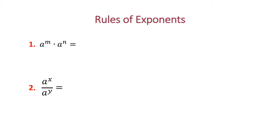If we have a to the m power times a to the n power, we need the same base number — as long as a is the same. So if it's 7 and 7, we can do that, but if it's 7 and 3, we can't. It has to have the same base. This equals a to the m plus n.